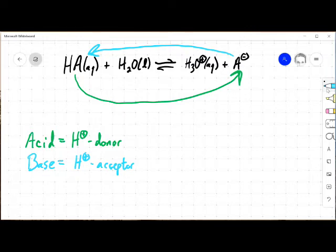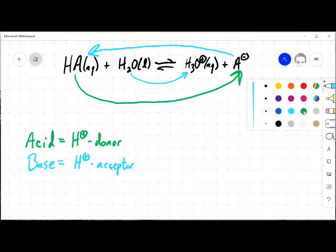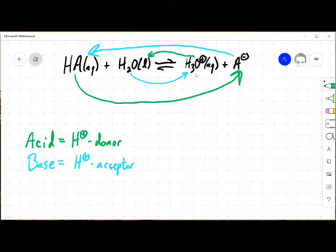Same thing can be said of water. What's happening to the water molecule? It's accepting an H plus. That means that it's acting as a base in this reaction. But if we look at the reverse reaction, H3O plus is donating an H plus to get back to the other side. So these are conjugate pairs.